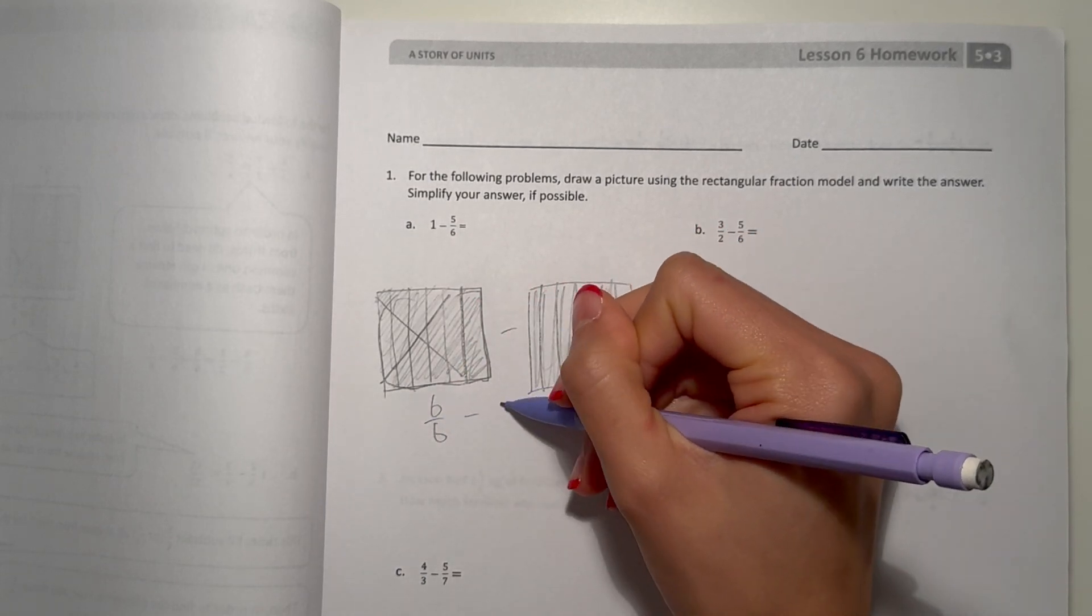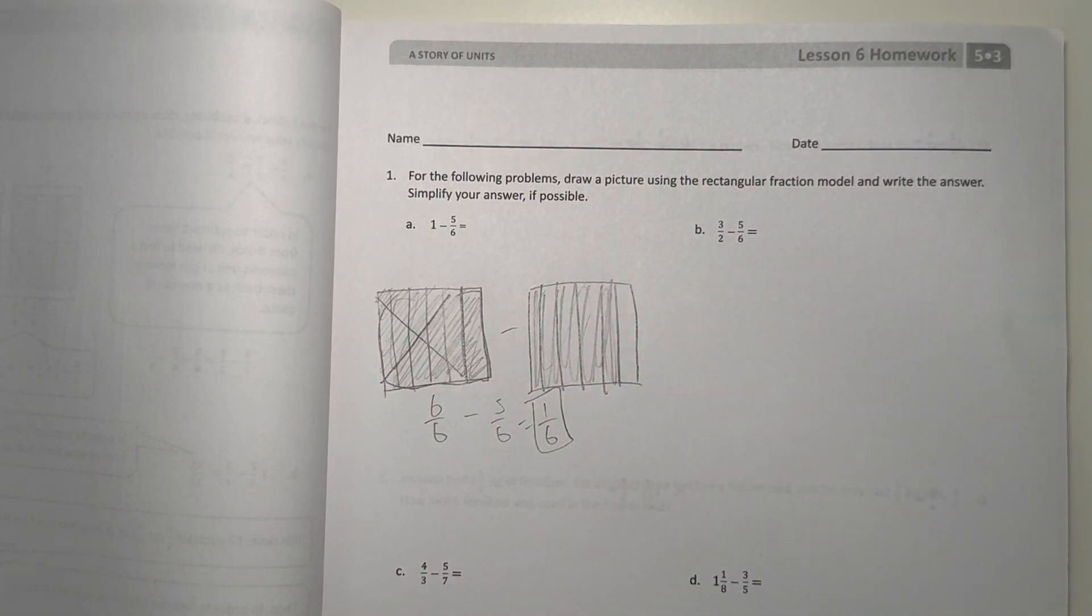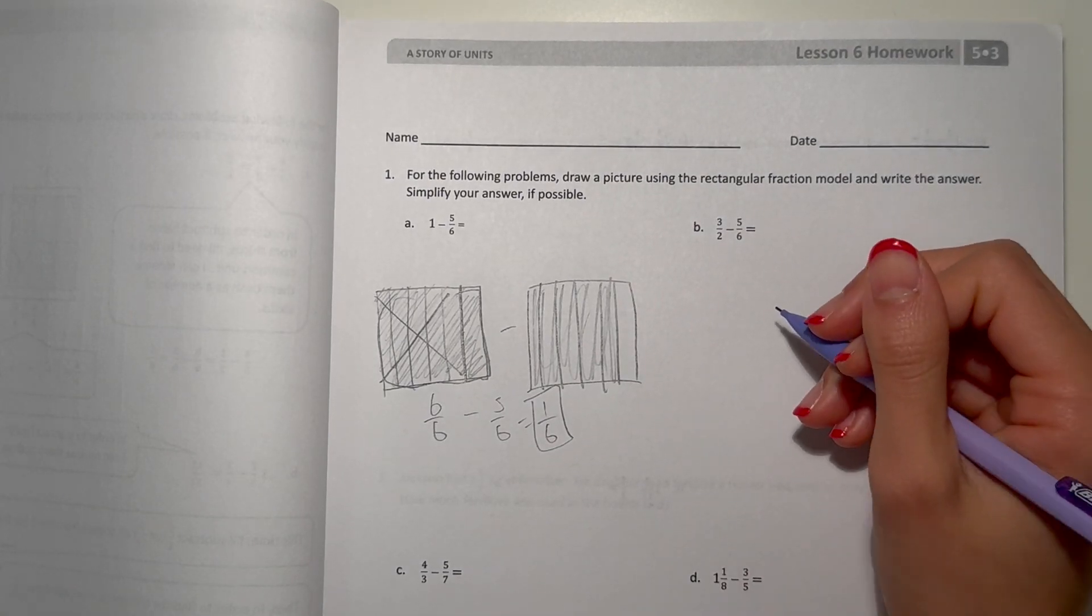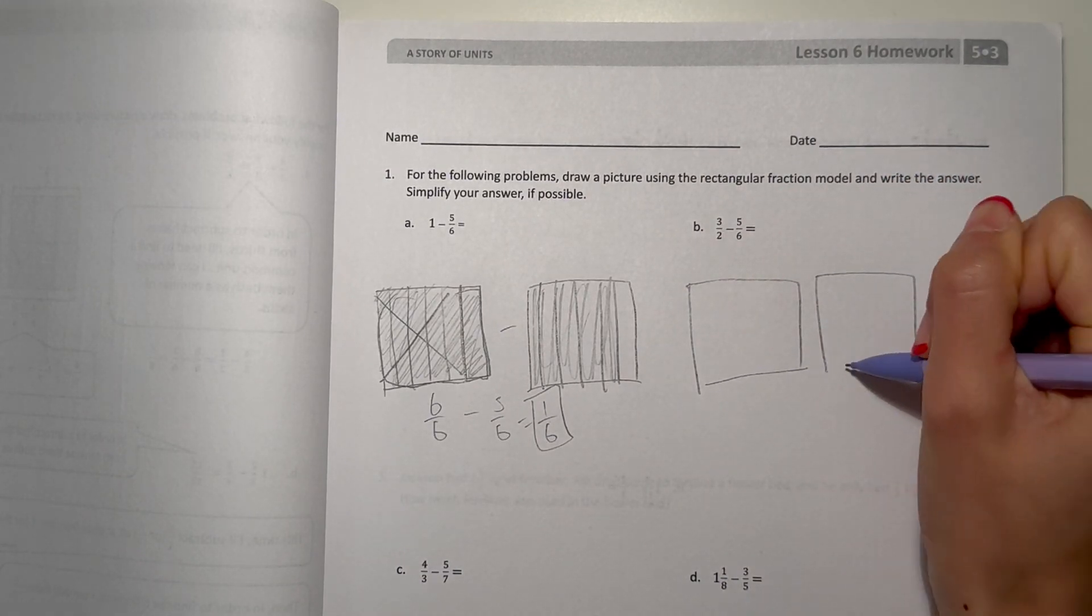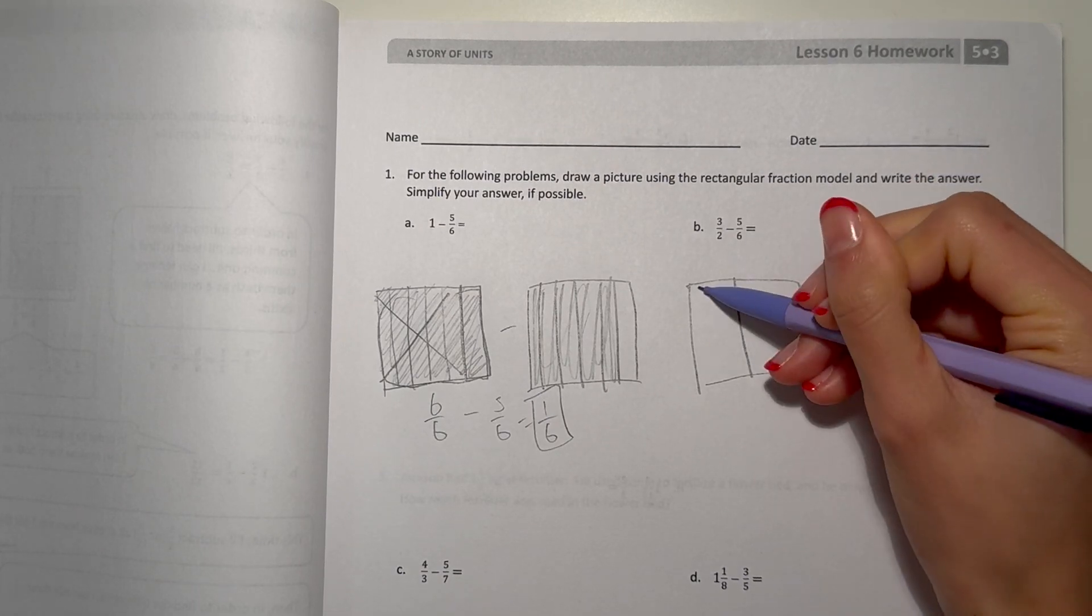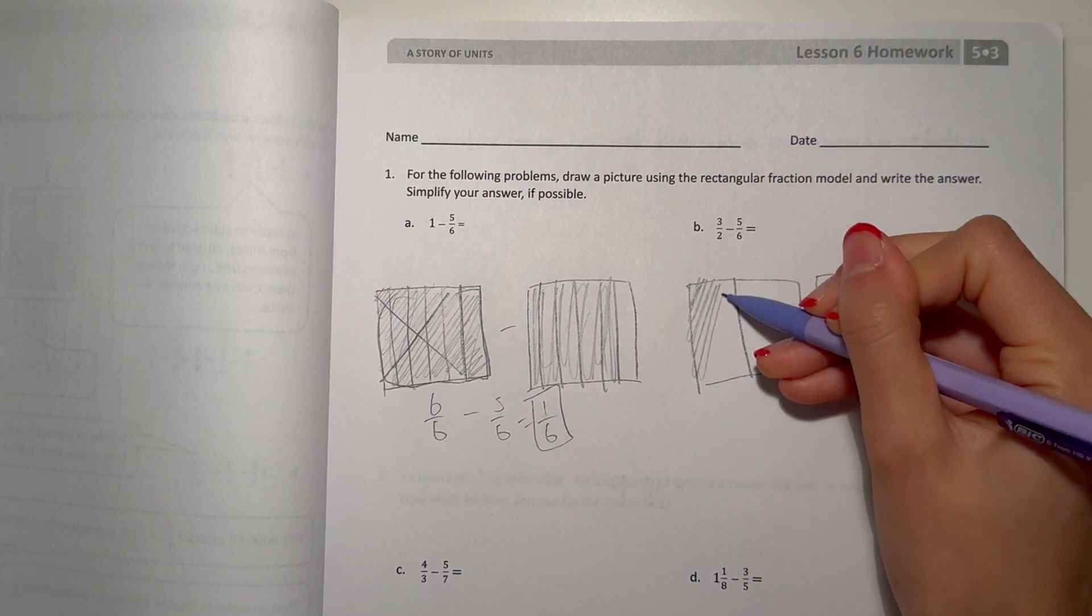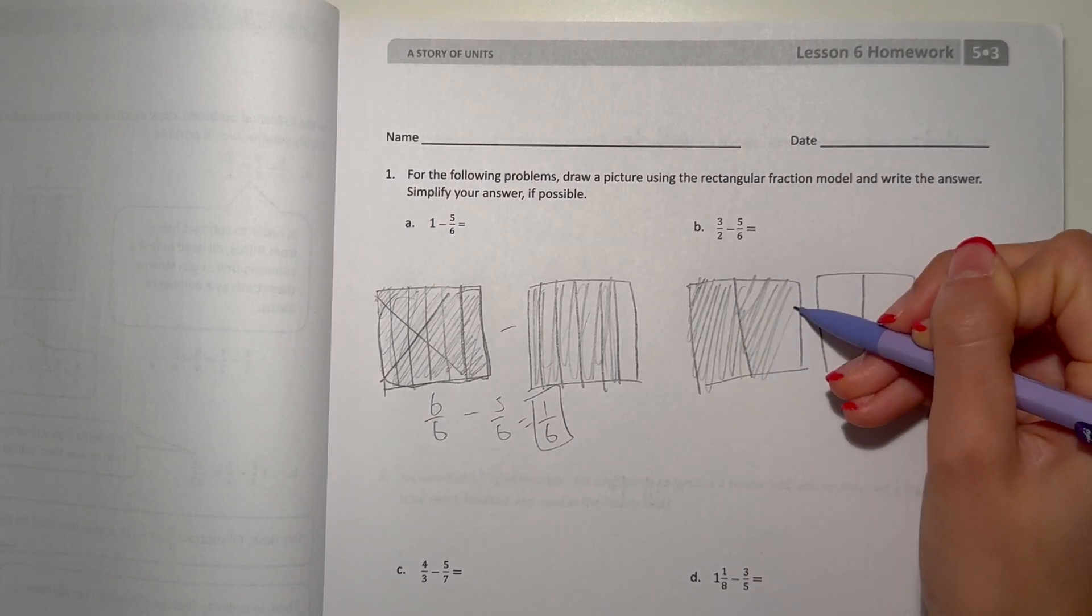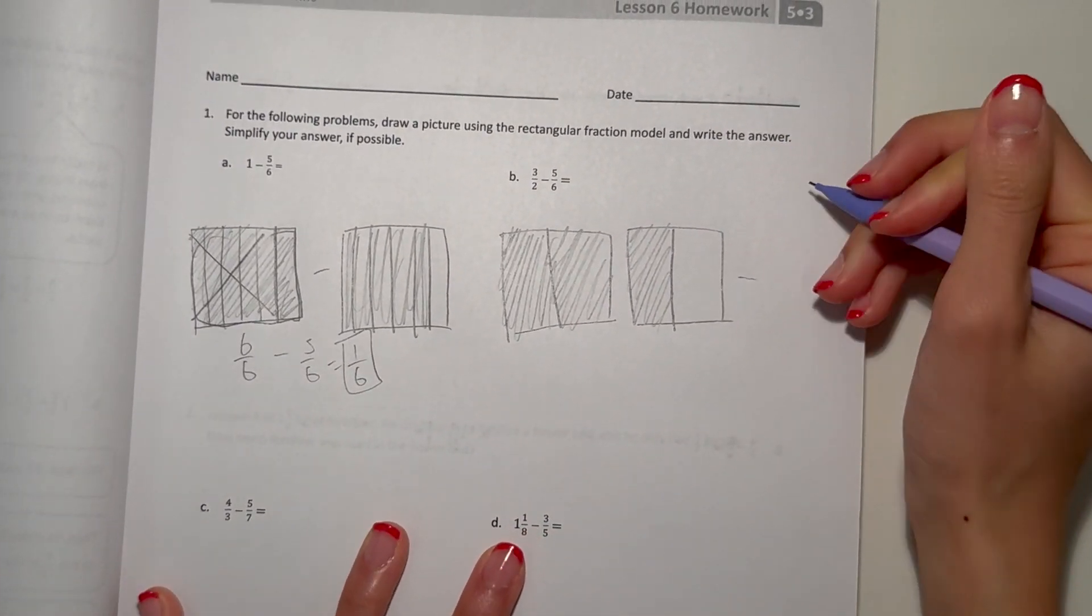Now B: 3/2 minus 5/6. Three halves is more than a whole, so we need to draw more than a whole to represent 3/2. So we have 1/2, 2/2, and 3/2. I'm running out of space. Minus 5/6.